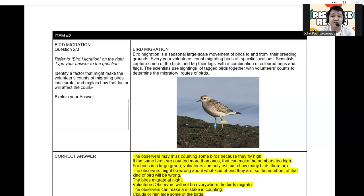Bird migration is a seasonal large-scale movement of birds to and from their breeding grounds. Every year, volunteers count migrating birds at a specific location. Scientists capture some of the birds and tag their legs with a combination of colored rings and flags. Scientists use sightings of tagged birds together with volunteers' counts to determine the migratory routes of the birds.